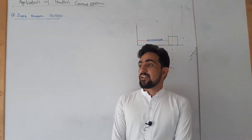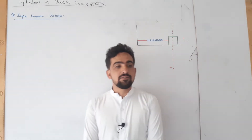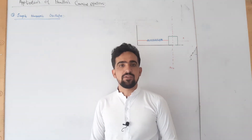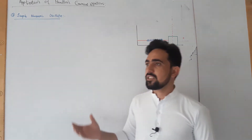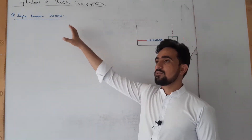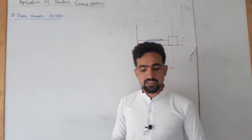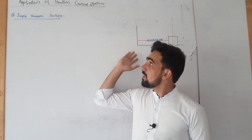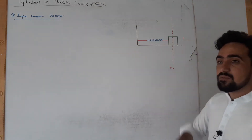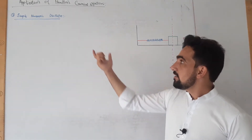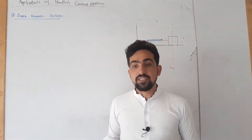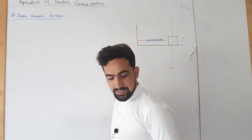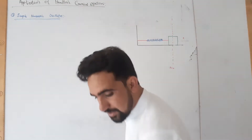In the last topic we discussed Hamilton's canonical equations of motion. Today we are going to discuss some of the applications of Hamilton's canonical equations of motion. First of all, let us go towards the simplest example, that is a simple harmonic oscillator. We are going to find the Hamiltonian of this system, as shown in the figure, which is displaced from its mean position at a certain distance x, and find its Hamilton's canonical equations.